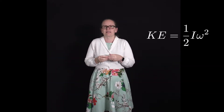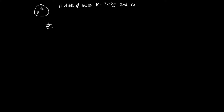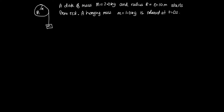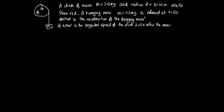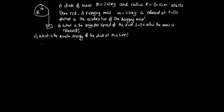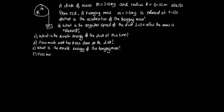Let's look at an example. A disk of mass M = 2.0 kg and radius r = 0.10 m starts from rest. A hanging mass m = 1.0 kg is released at t = 0 s. Part a: what is the acceleration of the hanging mass? Part b: what is the angular speed of the disk 2.0 s after the mass is released? Part c: the kinetic energy of the disk. Part d: work done on the disk. Part e: kinetic energy of the hanging mass. Part f: has mechanical energy been conserved?